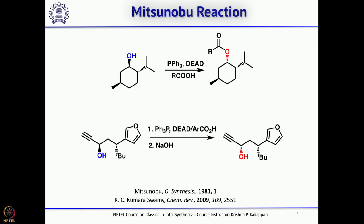Here are some examples — this is menthol, and one can do a Mitsunobu reaction; notice the stereocenter is exactly opposite, demonstrating inversion. Similarly, with this secondary alcohol you do the Mitsunobu reaction followed by hydrolysis, and you get completely inverted product.